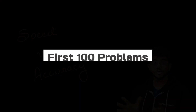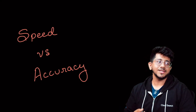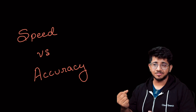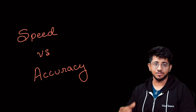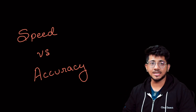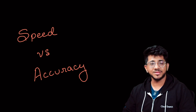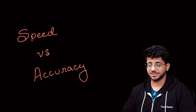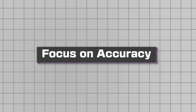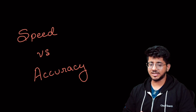In the first hundred problems, you'll realize that your implementation and logic are both weak — you can't really code well or understand what to use in a problem. So what can you do? Focus on accuracy. Why accuracy and not speed?